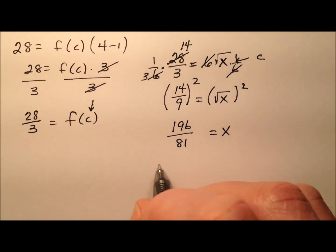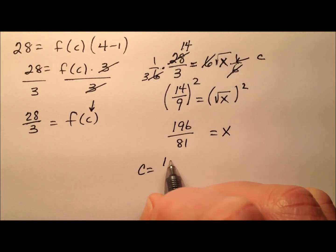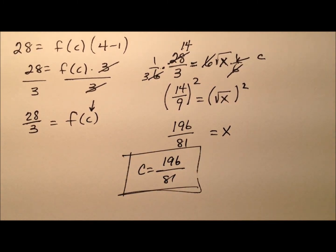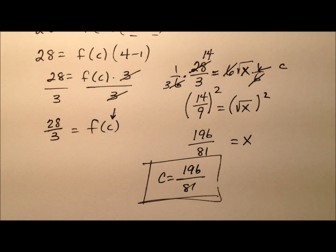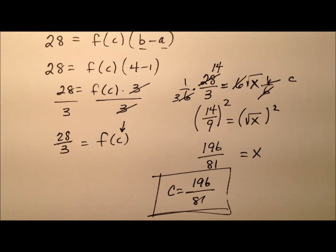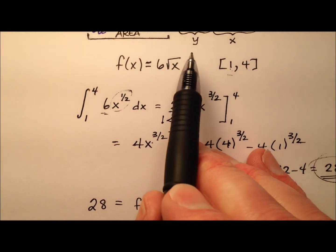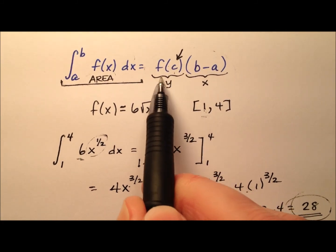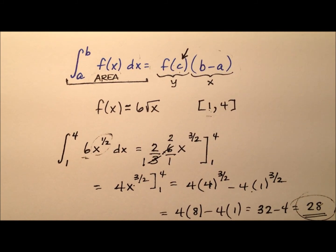Squaring both sides of this equation leaves me with x equals 196 over 81. And that x value is the c value that I've been looking for. That's once again guaranteed by my mean value theorem. So c equals 196 over 81.